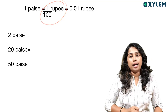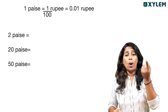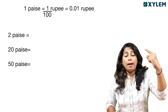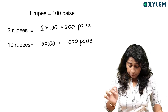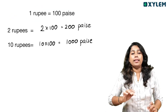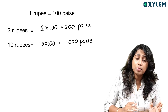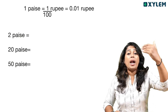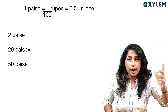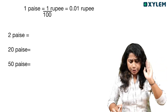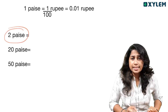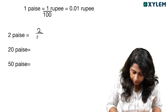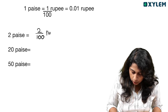So, one paise is 1 by 100 rupees. Confusion? It is the same price as 2 by 100 rupees.